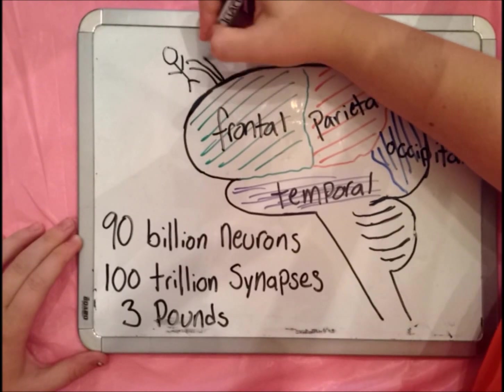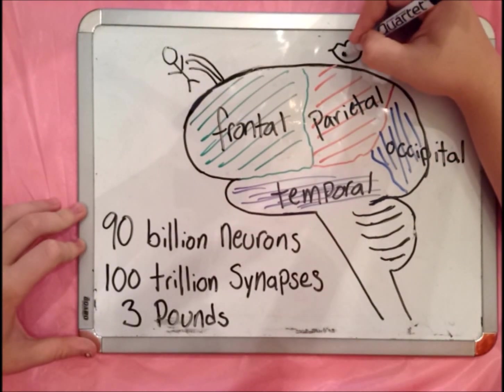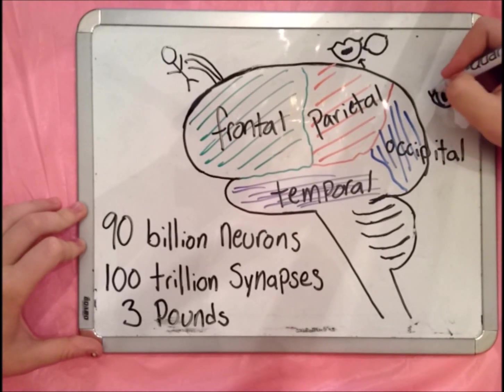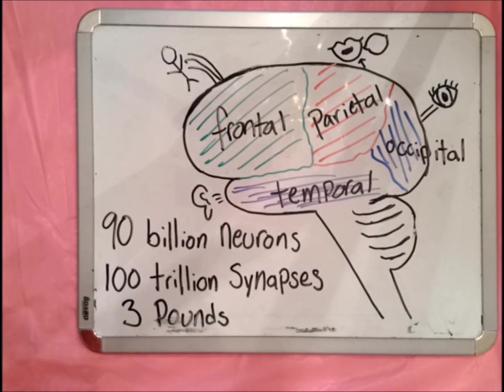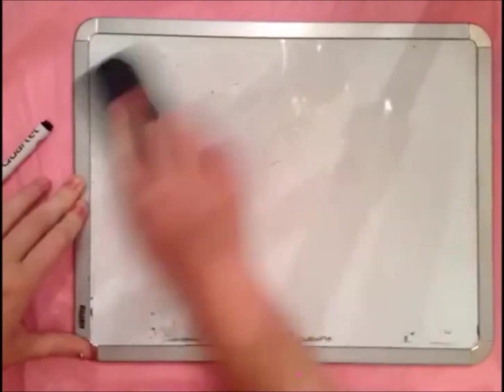Obviously, these different regions, or lobes, all contribute differently to how your brain works. Your brain wouldn't be able to perceive the world around it and react accordingly if the connections inside and outside the brain weren't in place or were connected incorrectly.